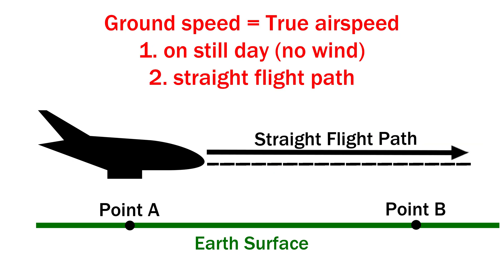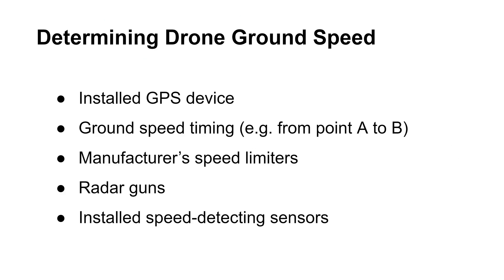We can conclude that the only scenario when ground speed will be equal to true airspeed is under the following two conditions. First, the aircraft must fly at a straight flight path at zero degrees angle relative to horizon. Second, there must be a still day with no wind. There is a variety of equipment and methods that can help a remote pilot keep the drone's ground speed under 87 knots. Among them are GPS devices or other sensors installed on a drone that measure the ground speed.